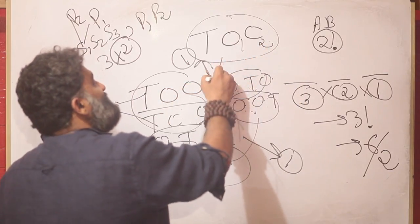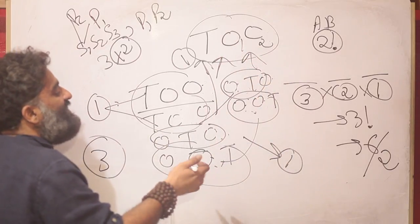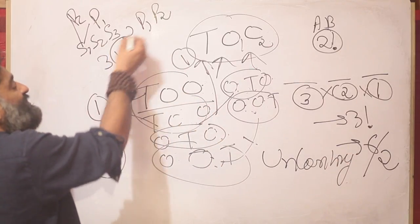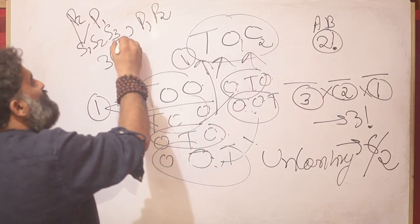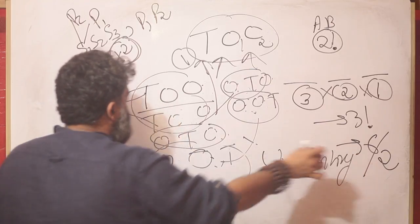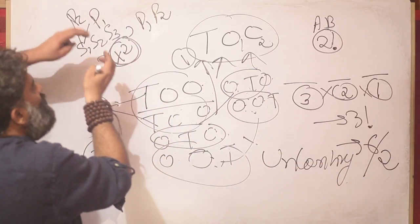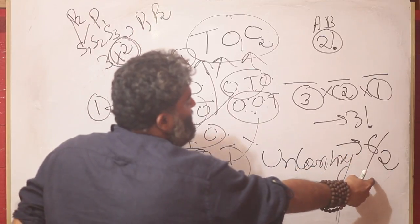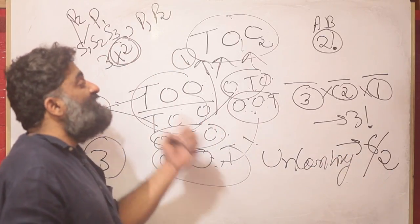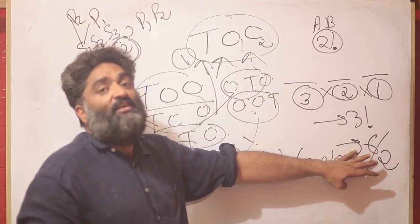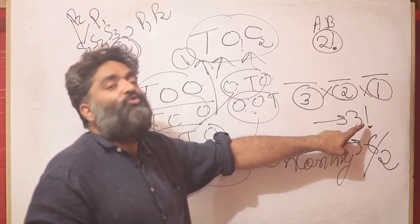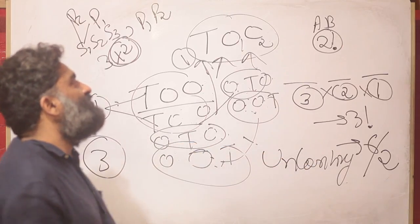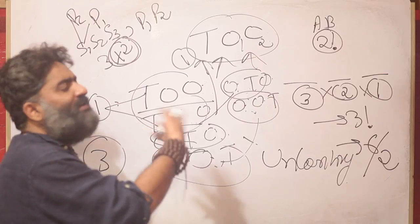Try and grasp this logic — this is the fundamental issue with arranging letters that have repeats. The new idea we are learning is 'uncounting.' Compare it with the shirt and pants example: 3 scenarios became 6 when you multiplied by 2; now 6 scenarios become 3 when you divide by 2. Where you were counting 2, you should count 1 — mathematically that means divide by 2. This is the core logic behind why the formula has a factorial in the denominator.